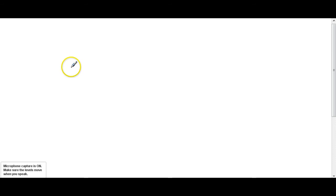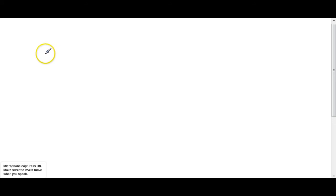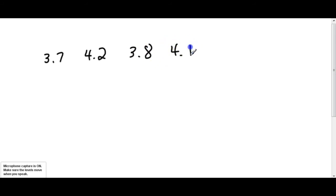The first thing we'll talk about is what is a trimmed mean. If any of you watched the Olympics, maybe you watched some of the figure skating and saw the scores from the judges. There were five judges judging the skating events, and they each gave scores — something like 3.7 from one judge, 4.2 from another, 3.8 from another, 4.1, and let's say 5.0.